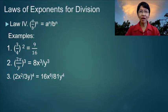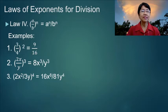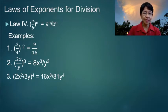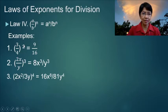We have laws of exponents for division. Law number 4: a over b raised to the nth power is equal to a to the n over b to the n. Example: 3 over 4 squared is equal to 9 over 16. That means we raise 3 to the second power and raise 4 to the second power separately.